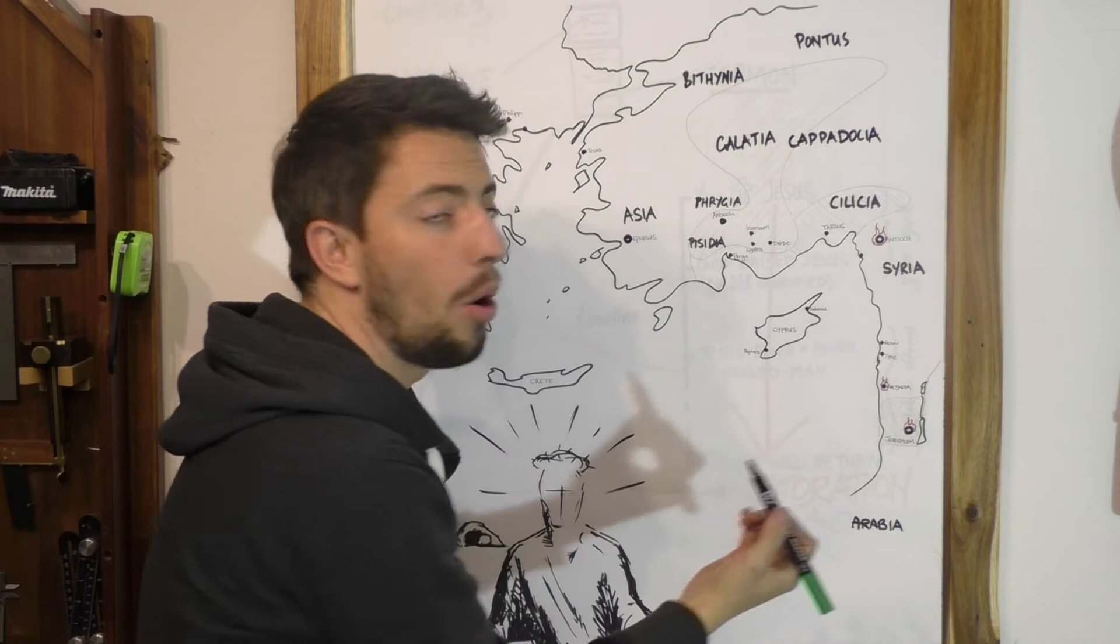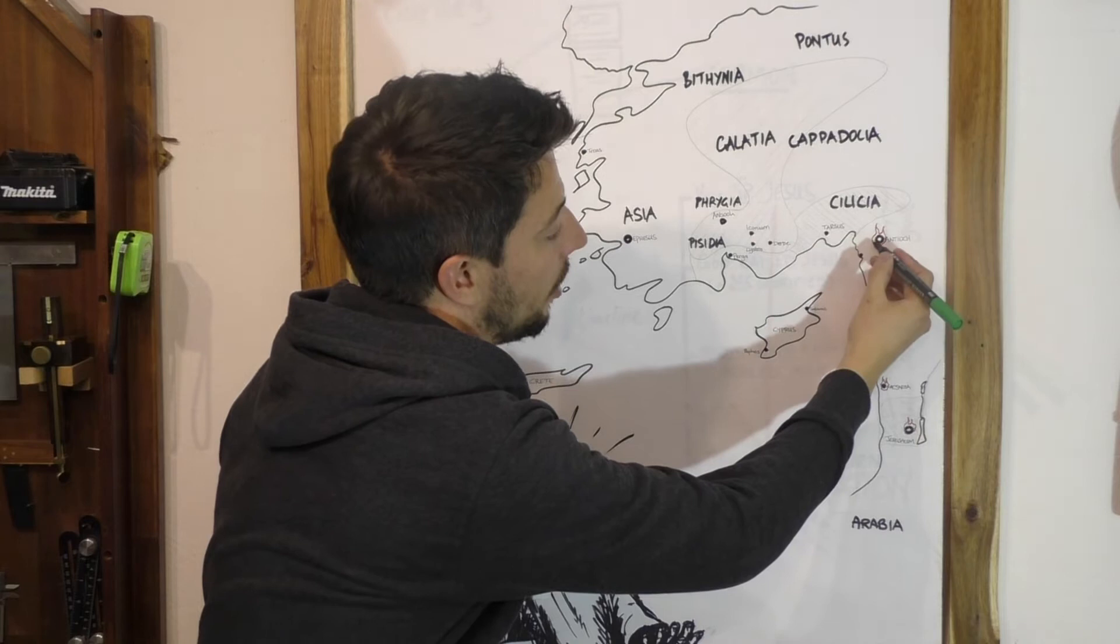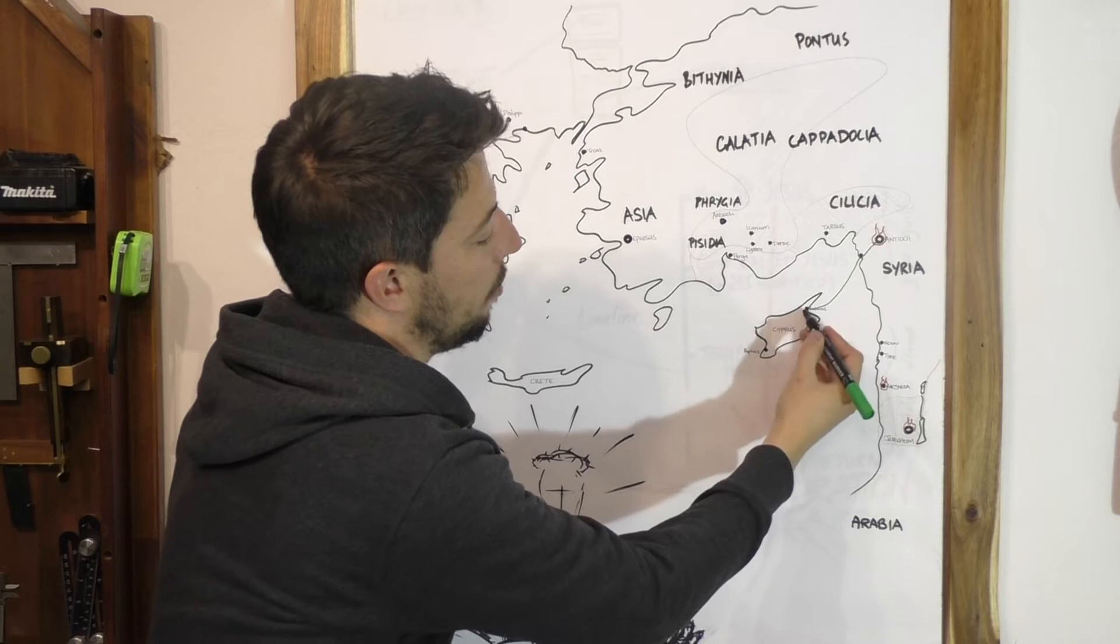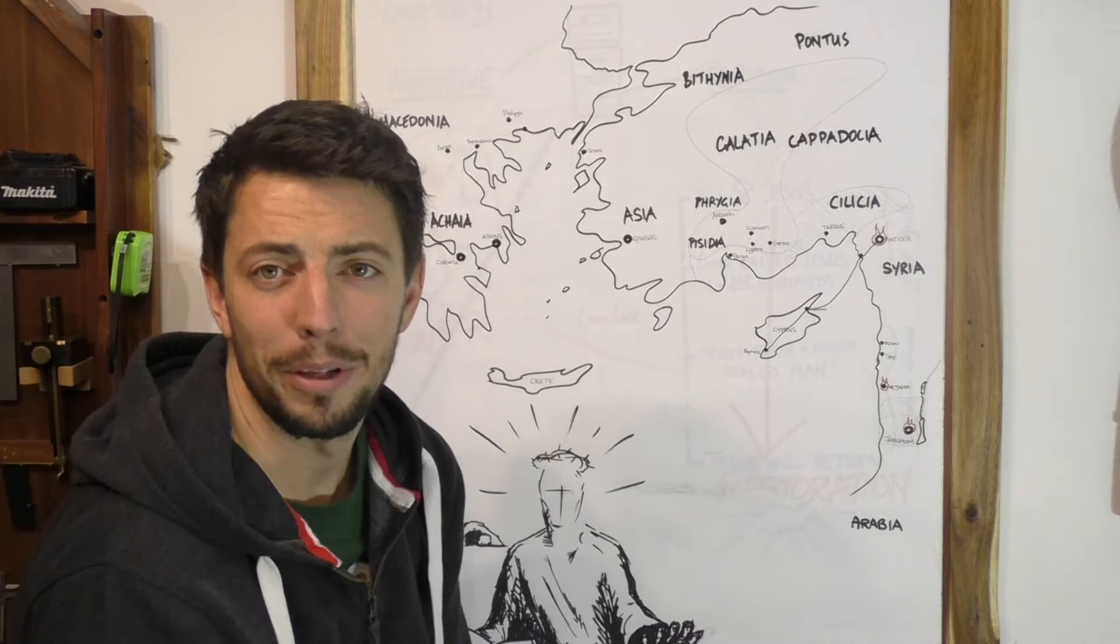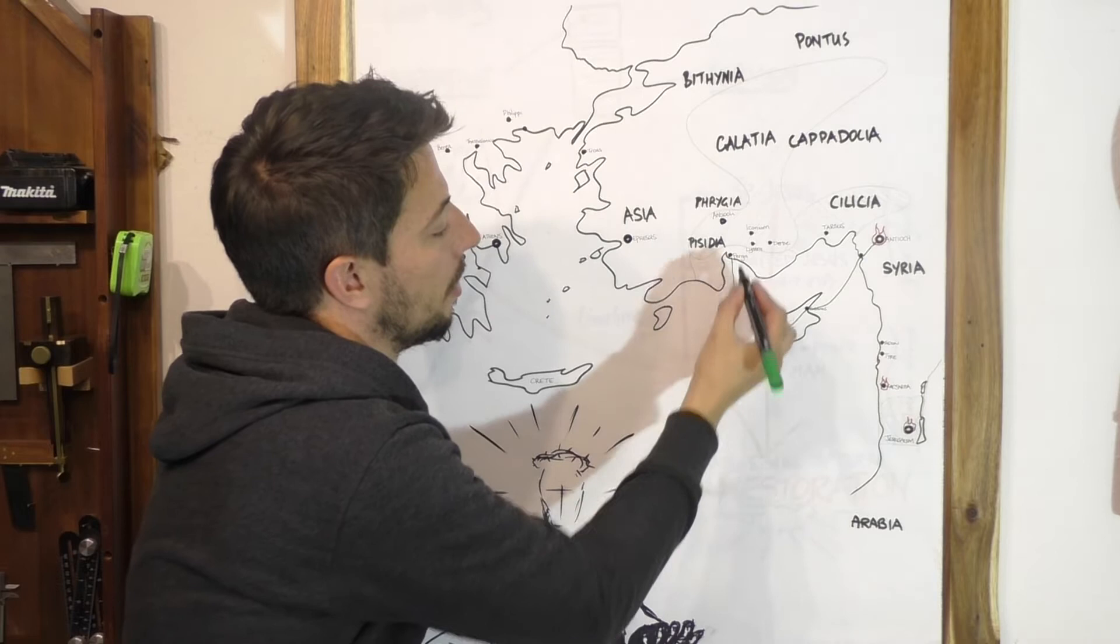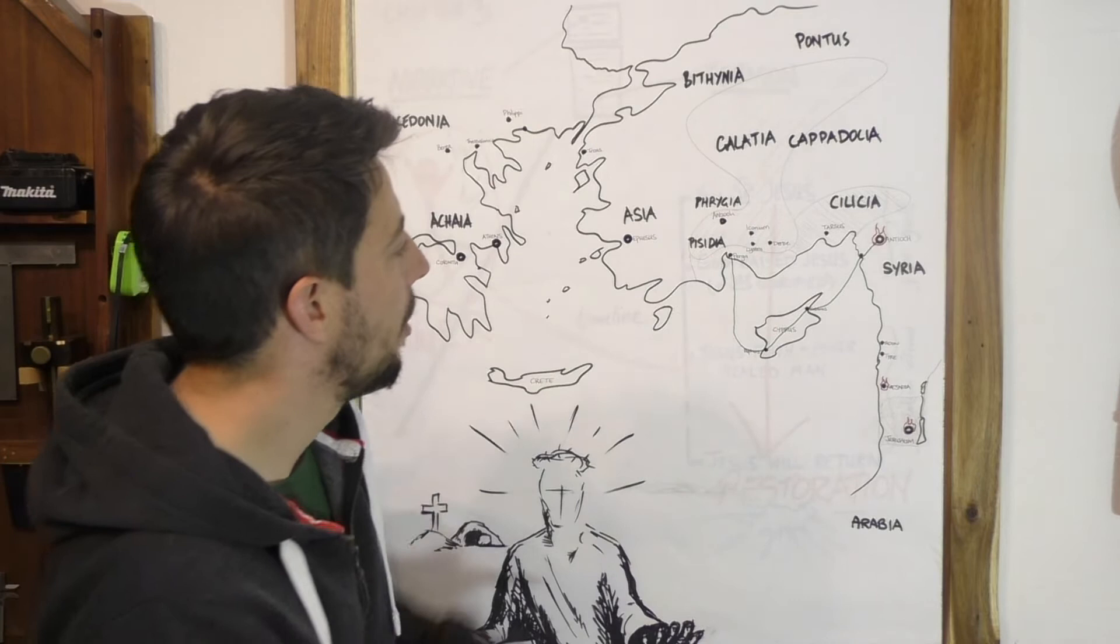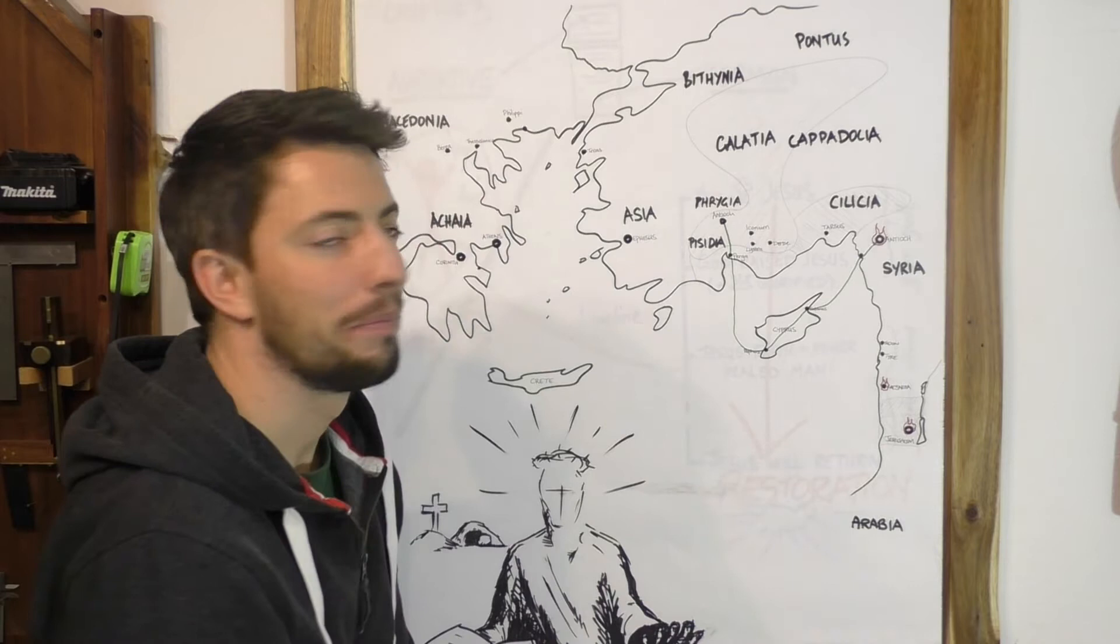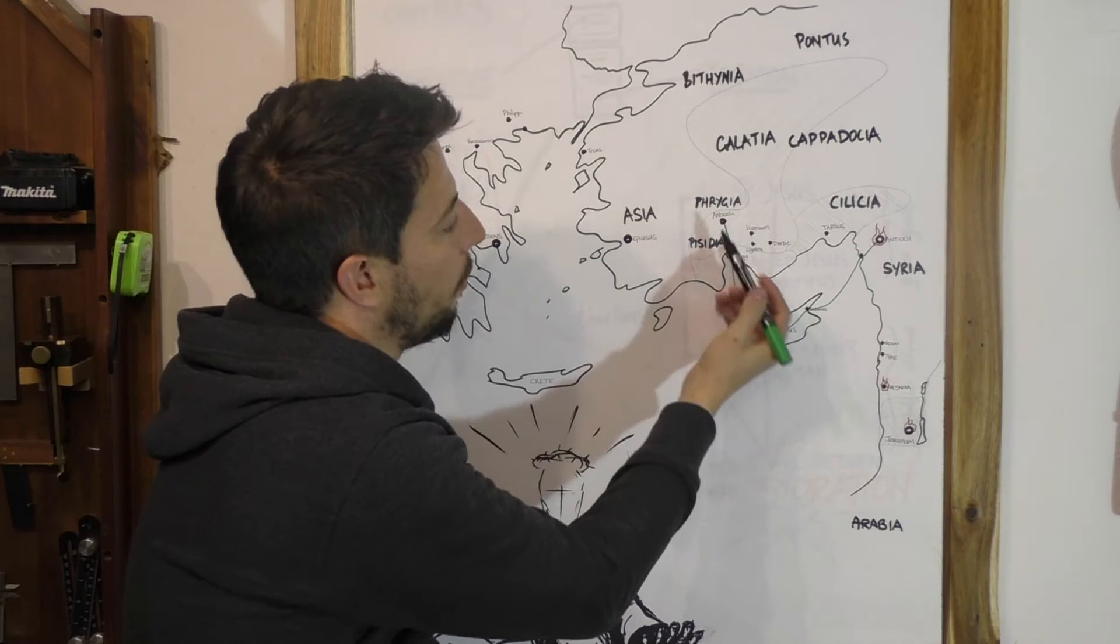Antioch is our setting for the beginning of chapter 13. I'll take green, so here they begin. It's Paul and Barnabas are set apart for the first missionary journey. They head down to Seleucia and take a boat to Salamis, and they move down through Cyprus. During this time the proconsul believes from Paphos. They will take a boat up to Perga, this would be the region of Pamphylia, and from there they will move up into Galatia, up to Antioch of Pisidia.